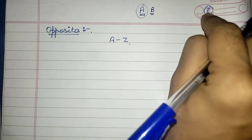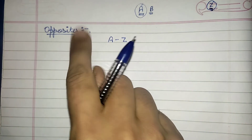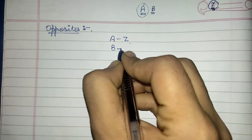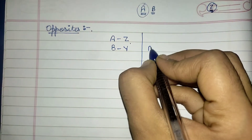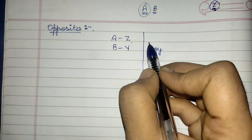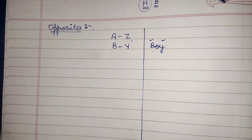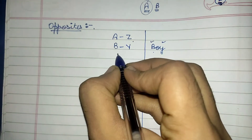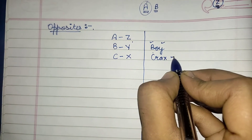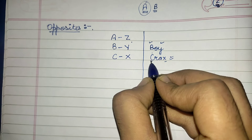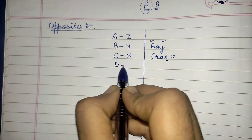B and Y are opposite to each other. Next, C and X — you know there are some chips for kids called 'crax', so C and X are opposite to each other. Next, D and W — the cold drink 'Dew' — D and W are opposite to each other.